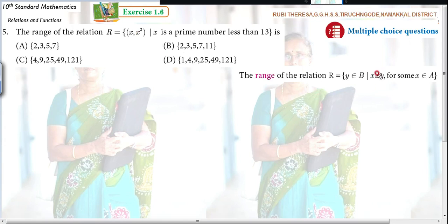So actually, relation is what? X is related to Y. That means X comma Y. But in the place of Y, what is the condition they have given? X squared. And also, what is the X? X is a prime number less than 13. That means you have to find out the prime numbers.